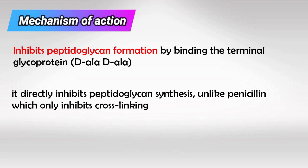Unlike penicillins which inhibit the peptidoglycan cross-linking, vancomycin inhibits the synthesis of peptidoglycan altogether. Specifically, it binds to the D-alanine-D-alanine glycoprotein and blocks the synthesis.